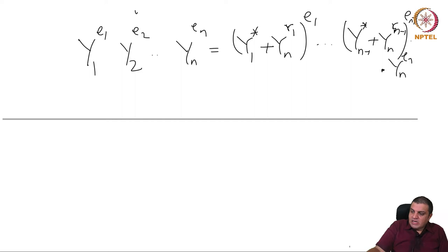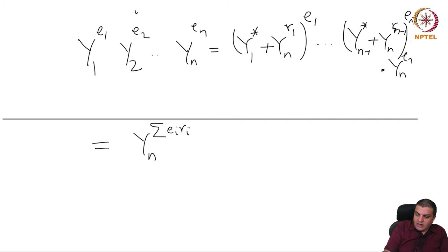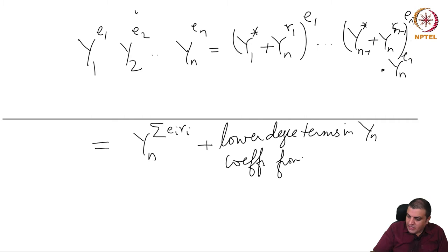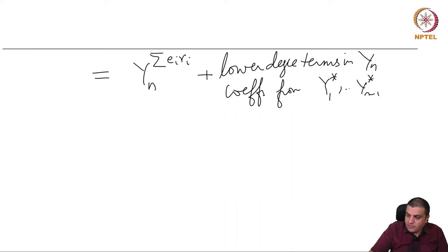Under this change of coordinates, a monomial y1^e1 · y2^e2 · ... · yn^en becomes (y1* + yn^r1)^e1 · ... · (y(n-1)* + yn^r(n-1))^e(n-1) · yn^en. This will have a leading term yn^(Σ ei·ri) with coefficient 1, and then lower degree terms in yn with coefficients from the other variables y1* through y(n-1)*.